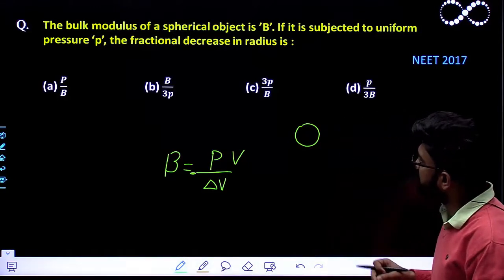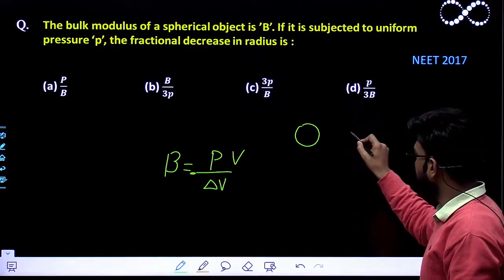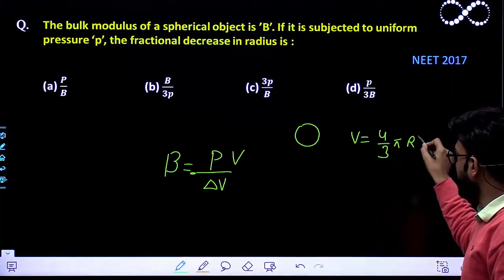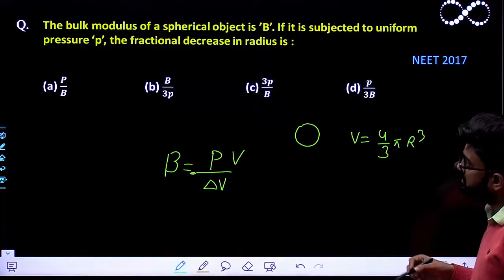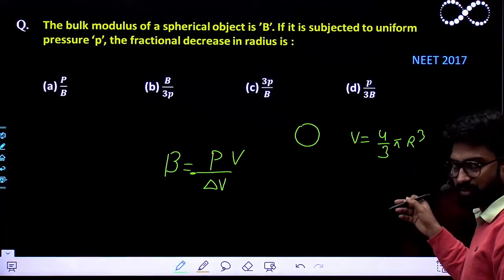It says that what would be the fractional decrease in the radius that you need to find out. We know that volume is given by the relationship 4 by 3 pi R cube. Since it is a spherical object, its volume would be this and this is the expression for volume.